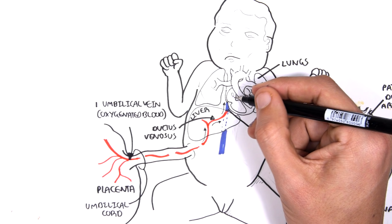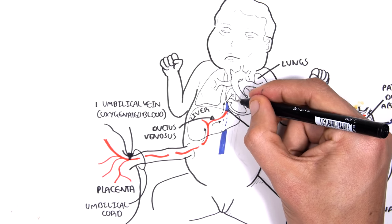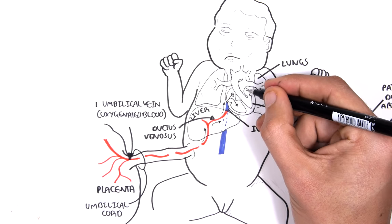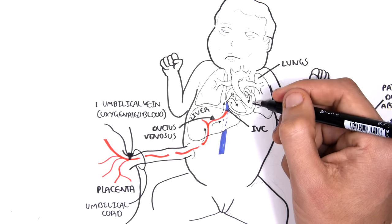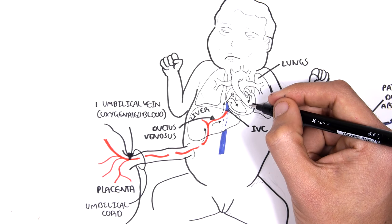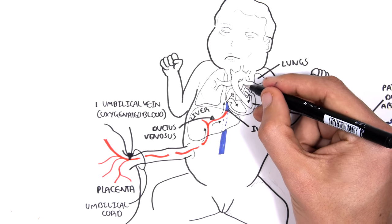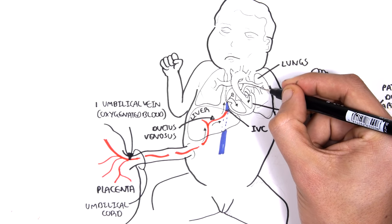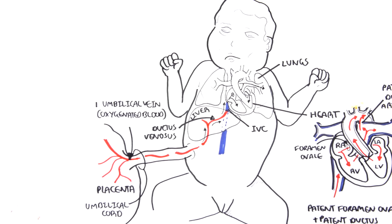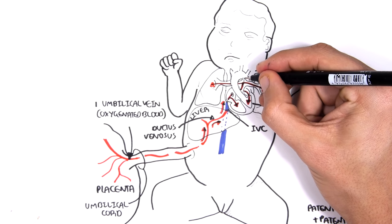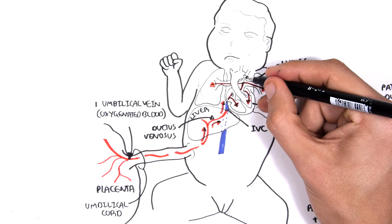The inferior vena cava entering the right side of the fetal heart will now contain partly oxygenated and partly deoxygenated blood. This blood enters the right atrium and then either goes into the right ventricle, or it goes through the patent foramen ovale into the left atrium, bypassing the lungs, and then enters the left ventricle, where it is pumped into the aorta and into circulation. Blood pumped from the right ventricle can also enter the lungs via the pulmonary artery, but mainly it bypasses the lungs and goes straight into the aorta via the patent ductus arteriosus.